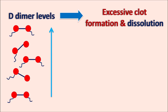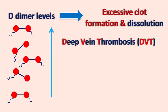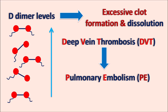One clinical condition with excessive clot formation and dissolution is deep vein thrombosis, commonly known as DVT. DVT can lead to another pathological condition, pulmonary embolism (PE), where a small clot fragment blocks the capillaries. D-dimer levels may also be excessively increased in stroke, where there is excessive clot formation followed by dissolution. In all these conditions, D-dimer levels may be excessively increased.